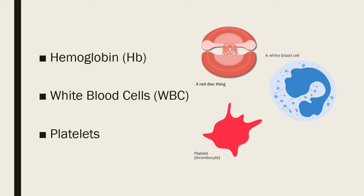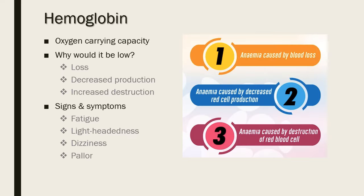What do these measurements tell us? Let's start with hemoglobin. The hemoglobin value is a measure of the oxygen-carrying capacity of our blood, and in essence measures whether tissues and organs in our body are receiving adequate oxygen, if all other things are normal. You want to make sure patients don't have a low hemoglobin, as complications from anemia can include ischemia and even end-organ damage. Reasons for anemia are separated into loss, decreased production, or increased destruction. Signs and symptoms include fatigue, lightheadedness, dizziness, and pallor.